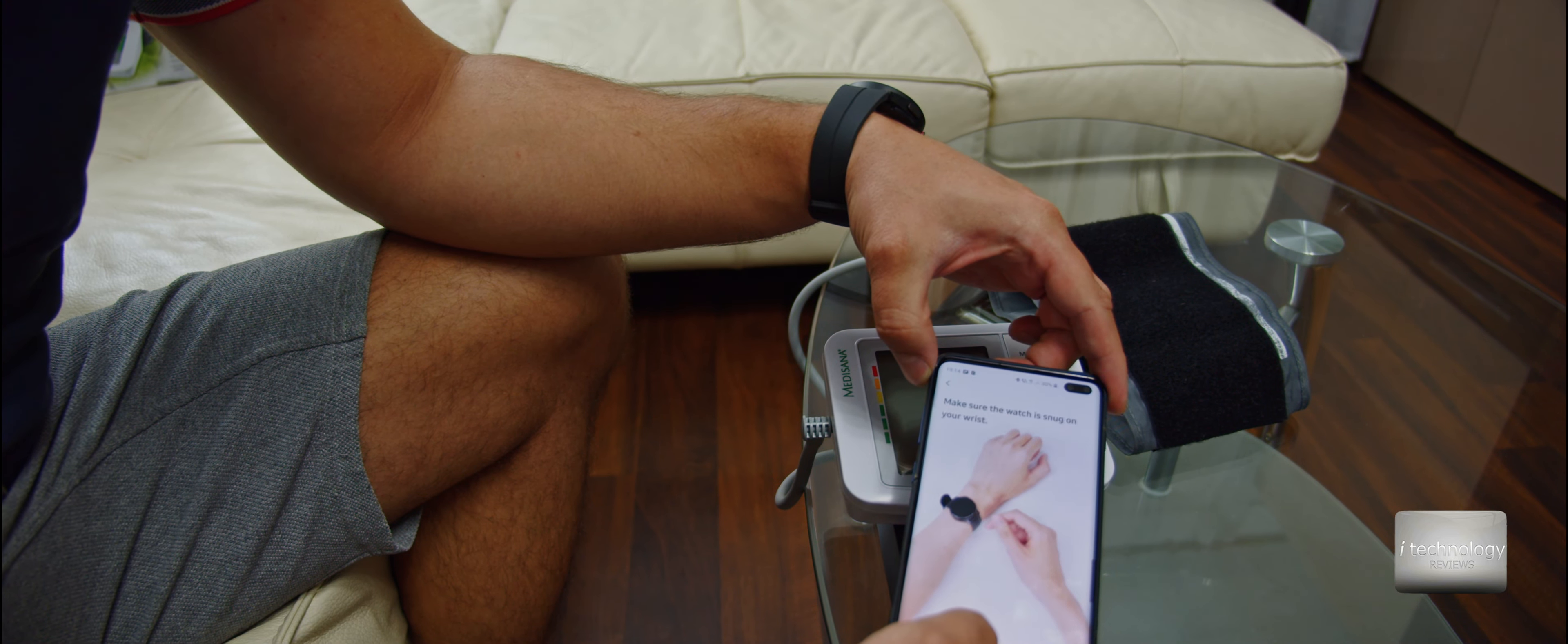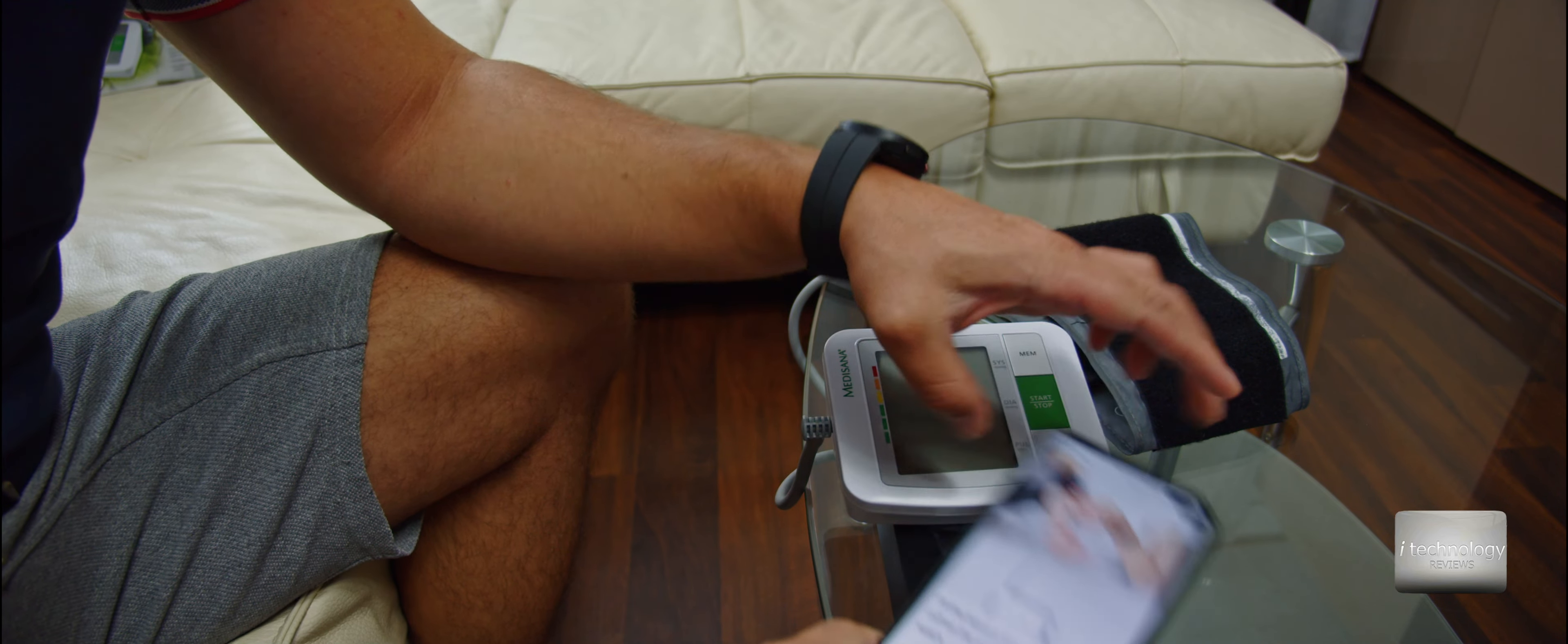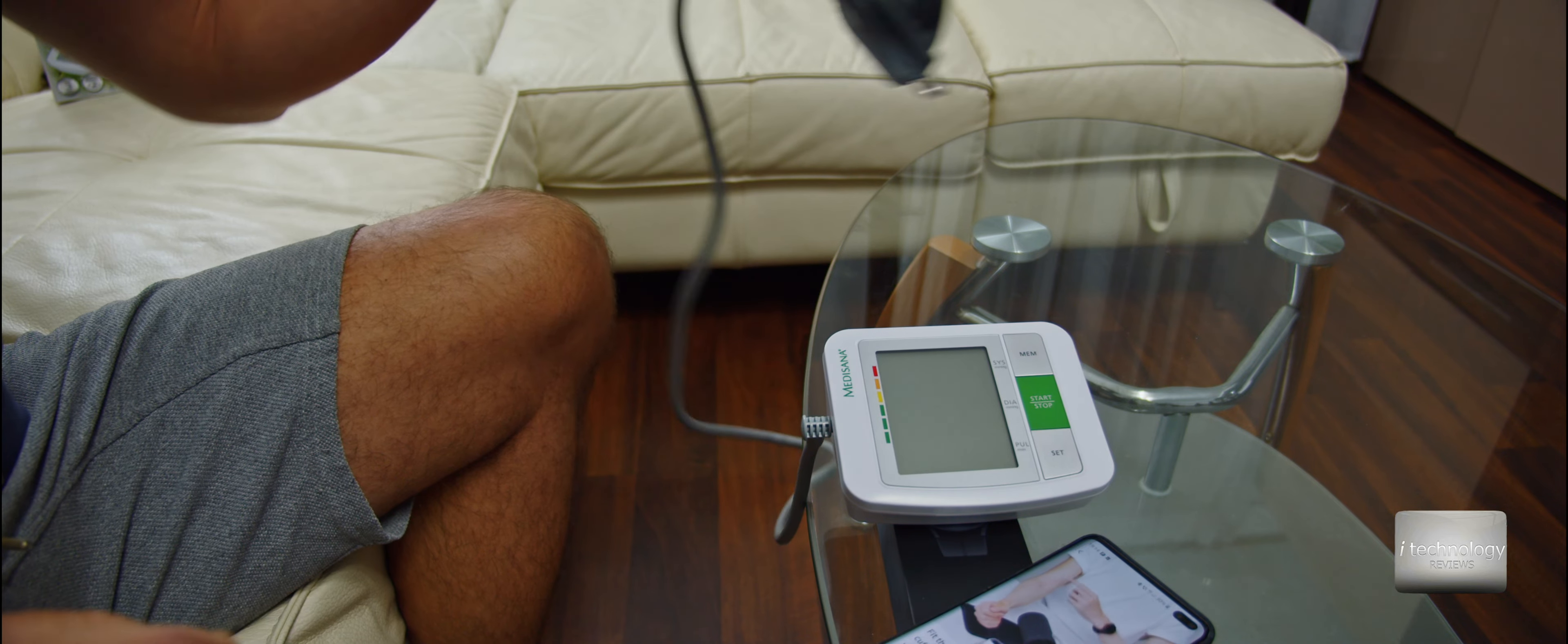To do this calibration, make sure the watch is snug on your wrist, so it's got to be quite comfortable but a little bit tight on the smartwatch, just to take the pressure. Fit the blood pressure monitor cuff on the arm opposite your watch.